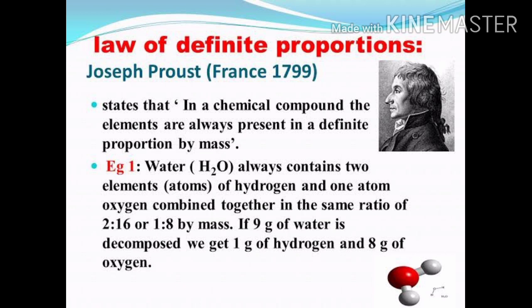The law of definite proportions was given by Joseph Proust. To understand it in an easy way: water, whether it is tap water, lake water, or rain water — it is still water, and the water molecule will always be made up of hydrogen and oxygen in a fixed ratio of 1:8, whatever the source of water.